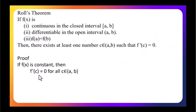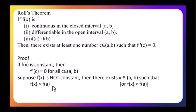For the proof of Rolle's theorem, if the function is constant, then the derivative is zero at each point, and we immediately get a point c where the derivative is zero. We now suppose that the function f is not constant.